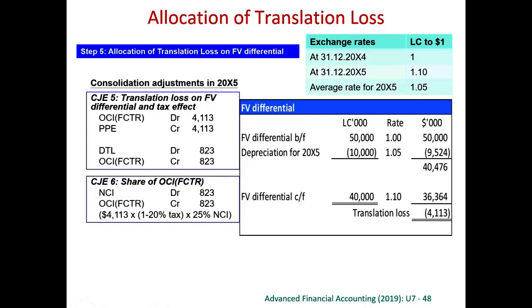Because this is not a wholly owned subsidiary, NCI should share 25% of the translation reserve for the fair value adjustment. On a net basis, the debit to other comprehensive income — translation reserve — is $4,113 minus $823. So 25% should be shared to NCI, which is $823. Therefore, we credit translation reserve $823 and debit NCI for the 25% share.